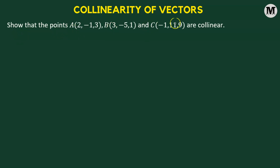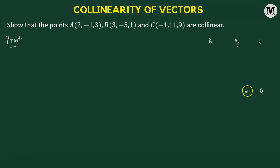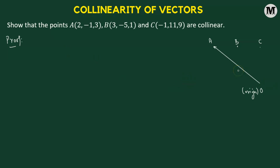Show that the points A, B, and C are collinear. Let's understand the problem and how we will approach it. Let's say we have points A, B, and C in space. We're going to consider a point O which is going to be the origin of some coordinate system. Next, we will join point O and point A with the help of a directed line segment, which will help us define the position vector of point A.